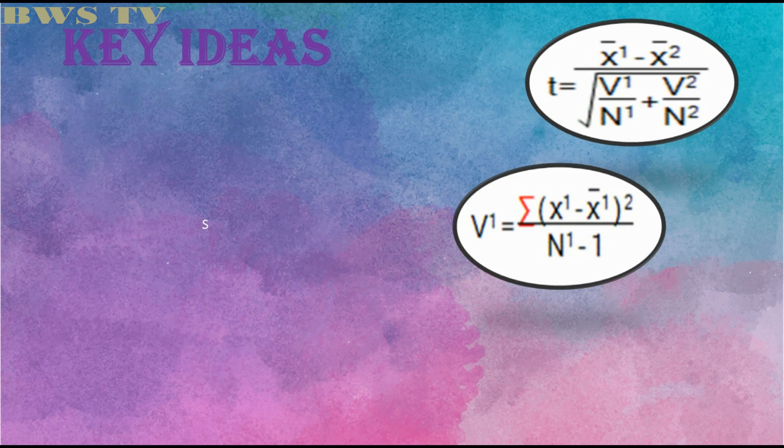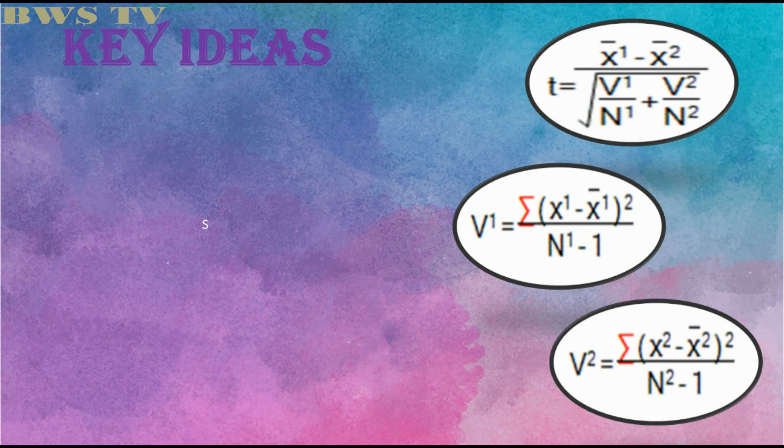We also have here the formula of v1 which is v1 equals the summation of (x1 minus x̄1) squared divided by n1 minus 1. And v2 which is equal to the summation of (x2 minus x̄2) squared divided by n2 minus 1.